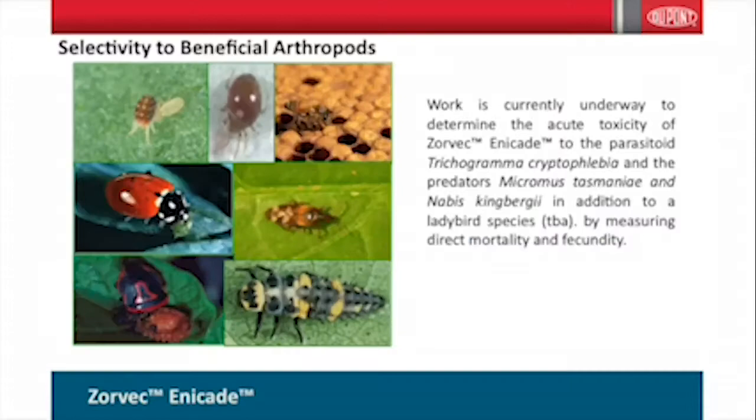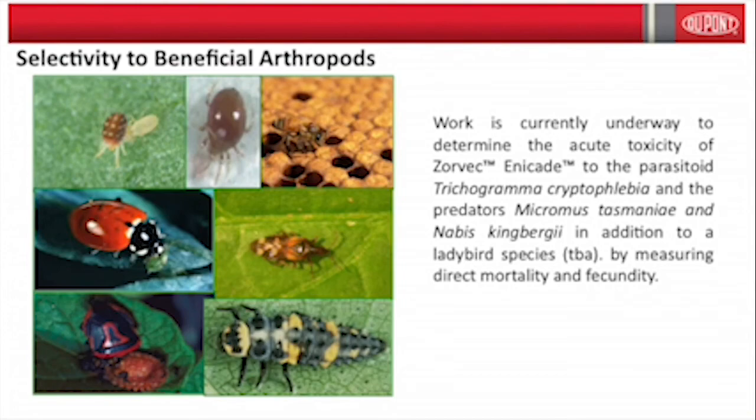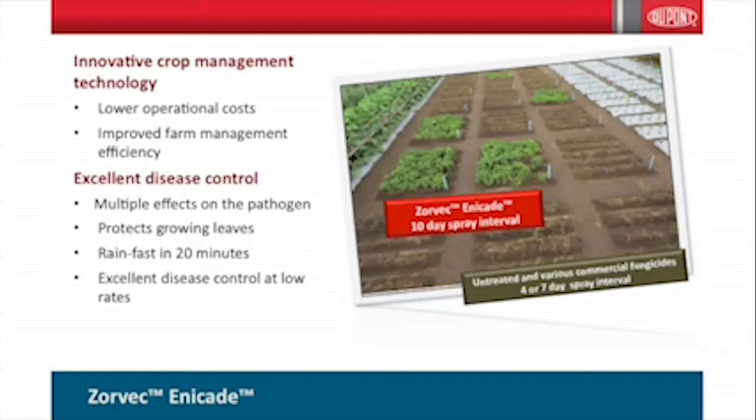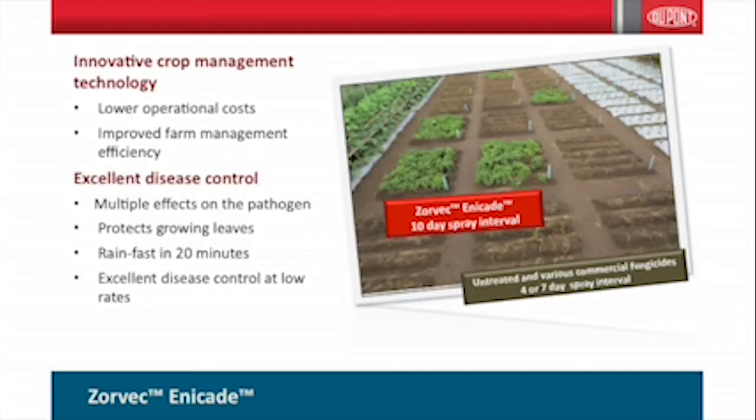Being a fungicide, the active ingredient isn't active on insects, but sometimes the formulation can have effects. Beneficial insect testing is currently underway with IPM Technologies in Melbourne, looking at common beneficials including trichogramma wasps, lacewings, and ladybirds — assessing both direct mortality and reproductive health. In summary, Zorvec Encade is highly effective, but resistance management requires extra attention so we can keep it working as long as possible.